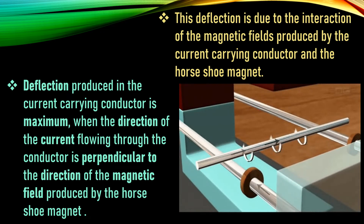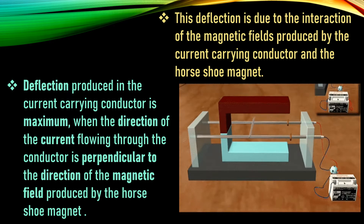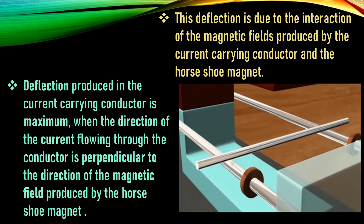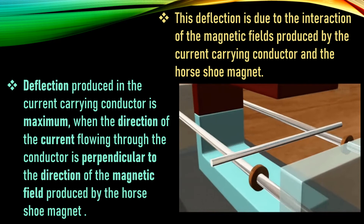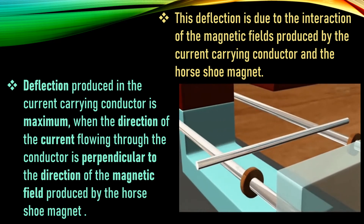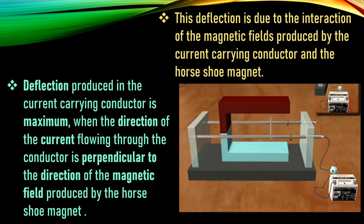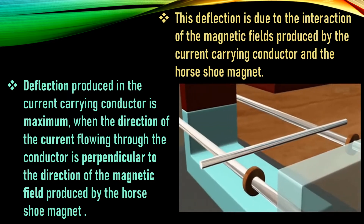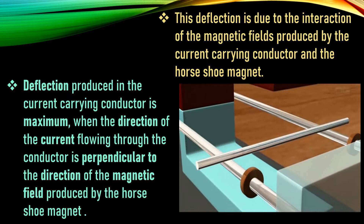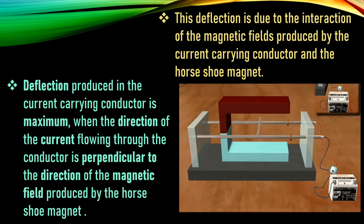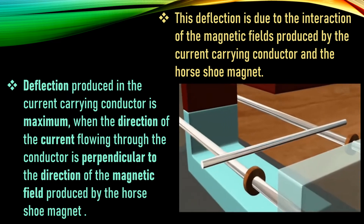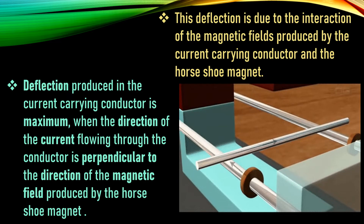The magnetic field produced by the horseshoe magnet is in the vertical direction, and the current flowing through the conductor is at 90 degrees to this magnetic field — they are perpendicular to each other. When arranged this way, the conductor experiences maximum force and shows maximum deflection. Please notice the direction of the external magnetic field, the direction of current flow, and the direction in which the rod is deflecting.